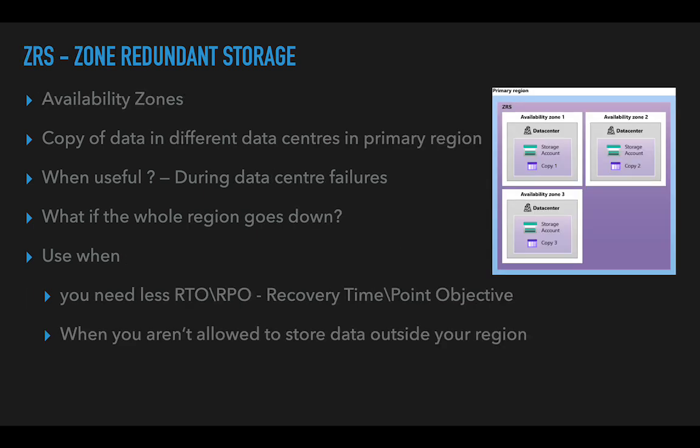A better option is Zone Redundant Storage (ZRS). When we say zone redundant, we maintain copies of data in different availability zones within the primary region. Three copies that were stored in the same data center in LRS are now stored in three different availability zones — copy one in AZ1, copy two in AZ2, copy three in AZ3.